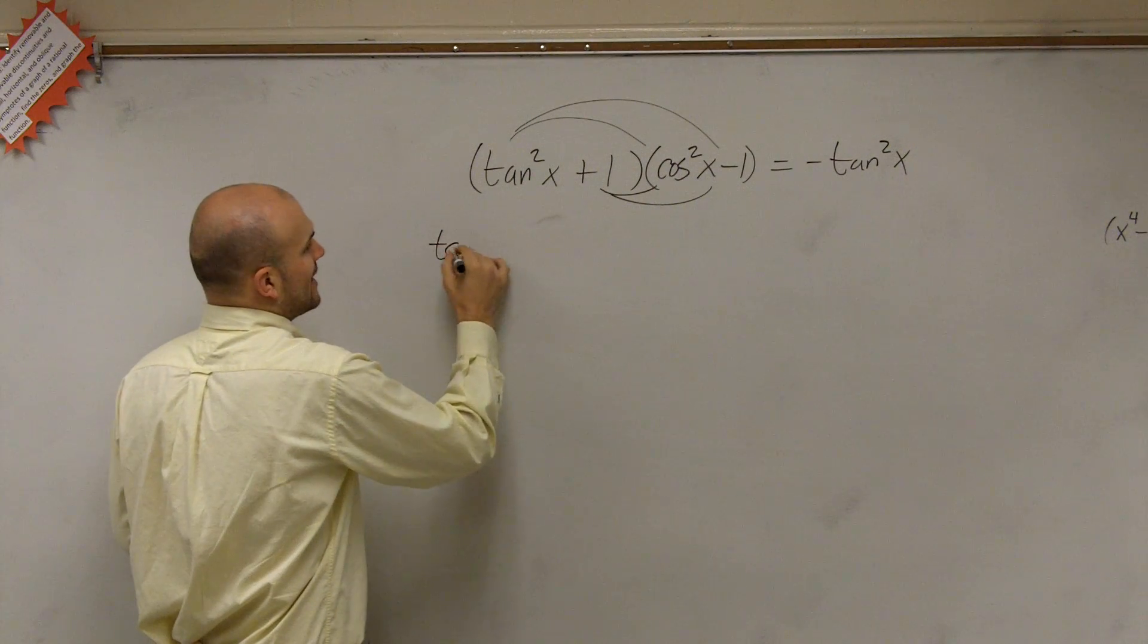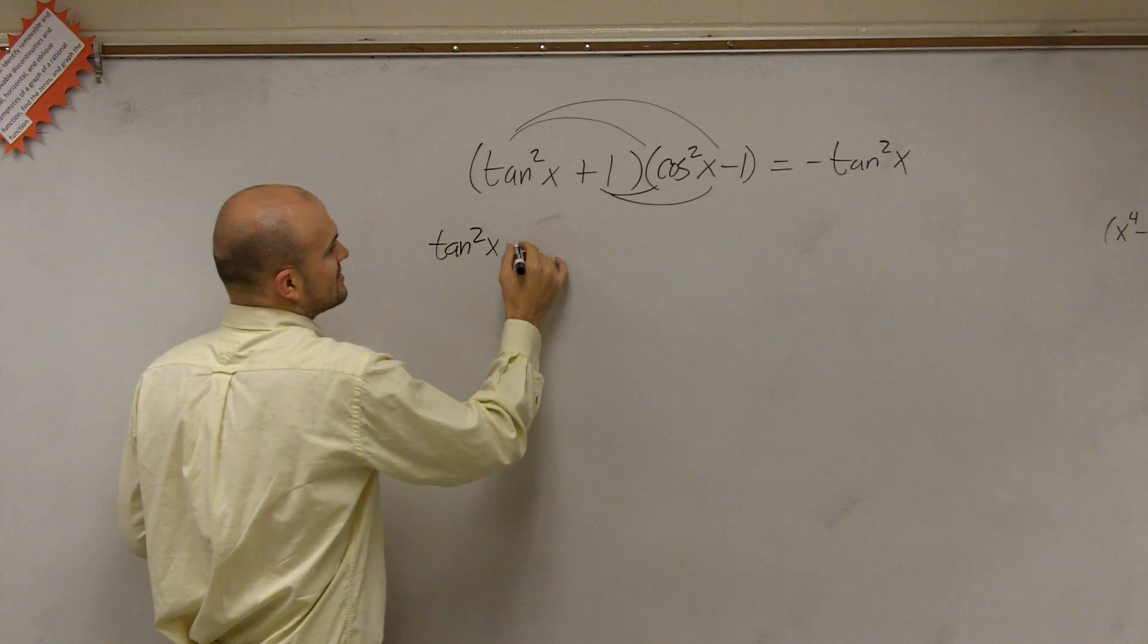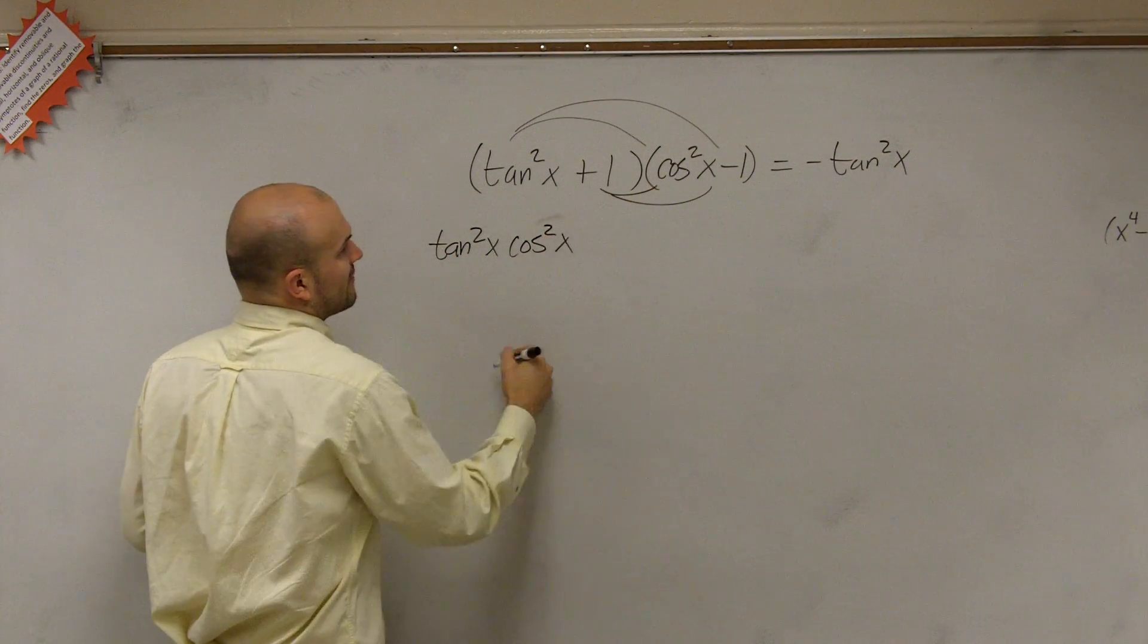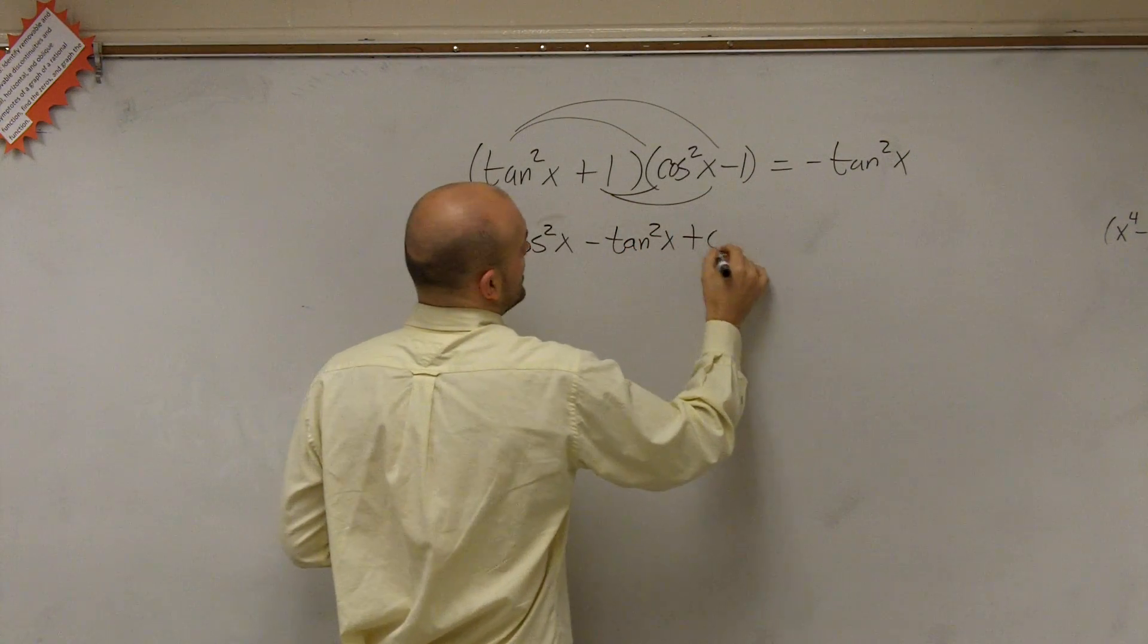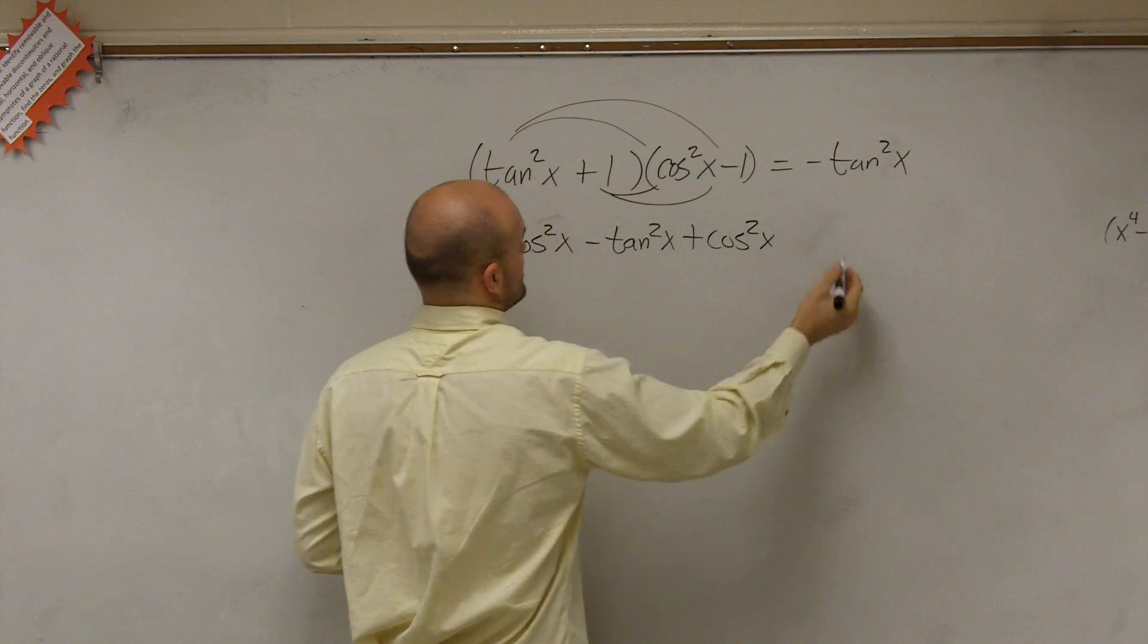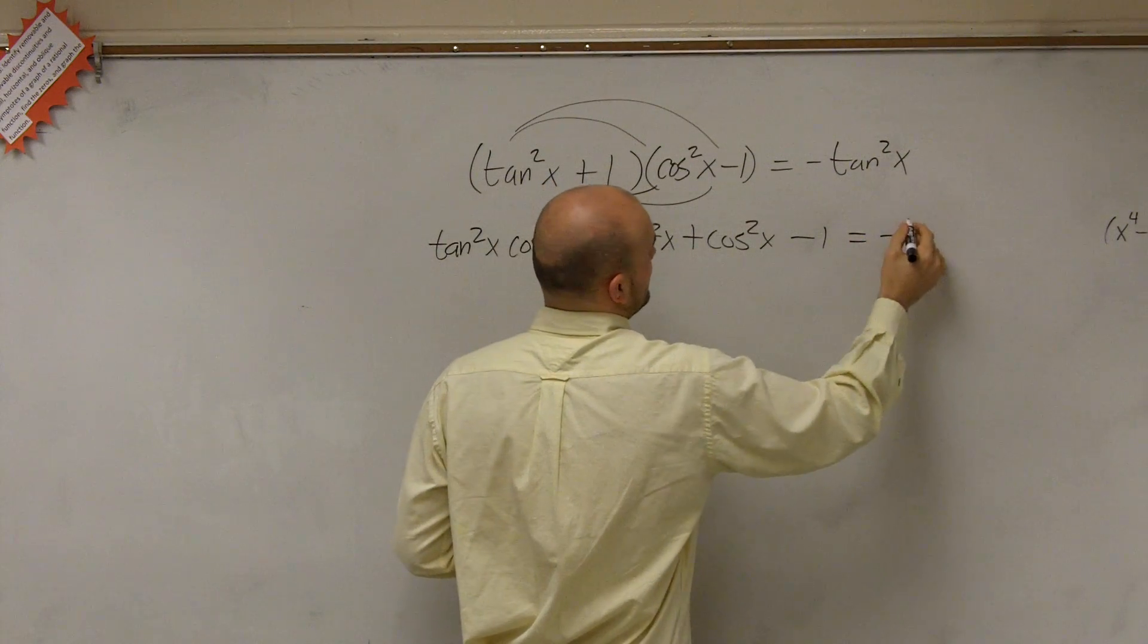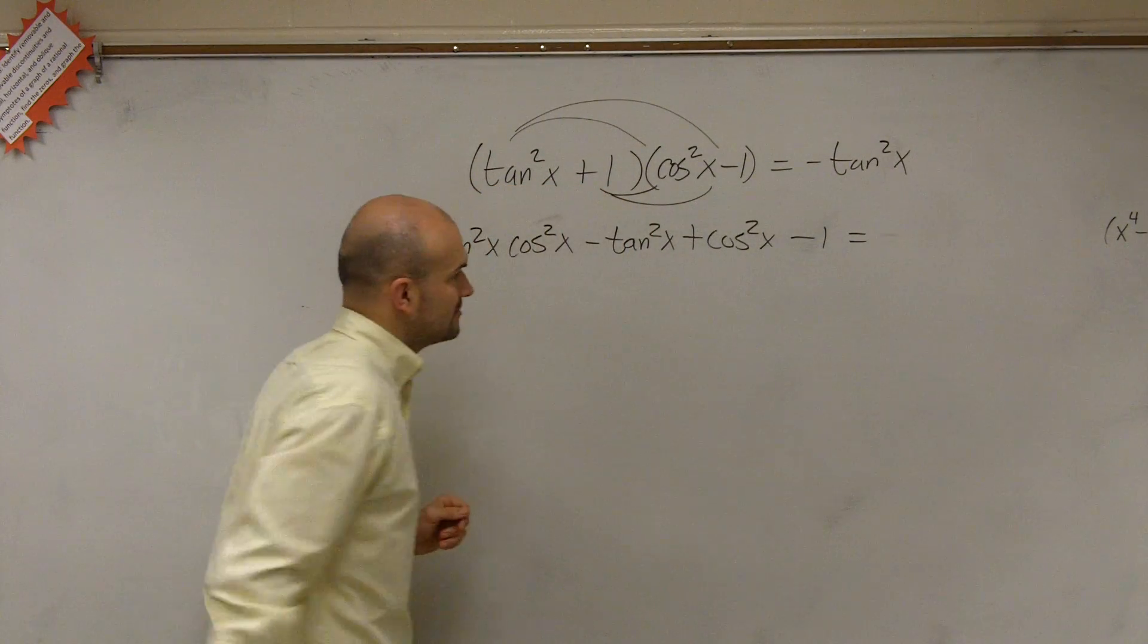So therefore, when we do that, we have tangent squared of x times cosine squared of x minus tangent squared of x plus cosine squared of x minus 1 equals our right side.